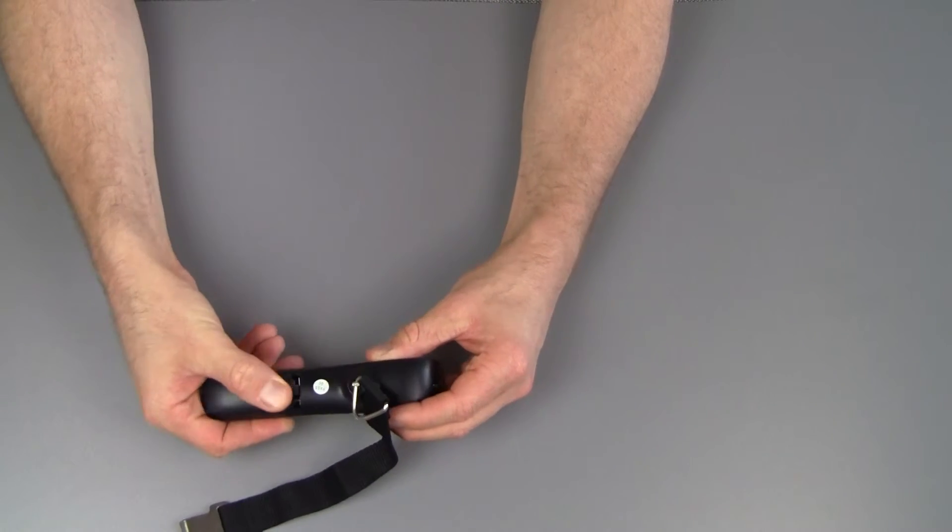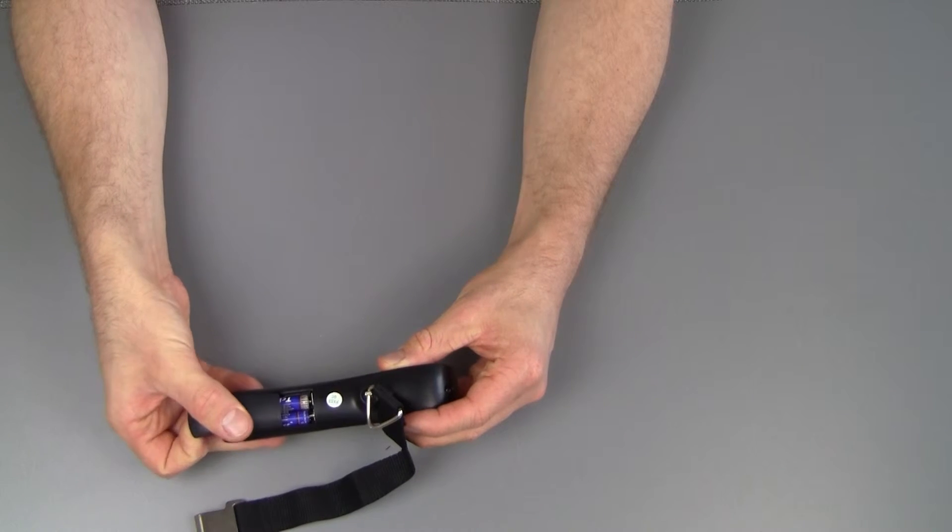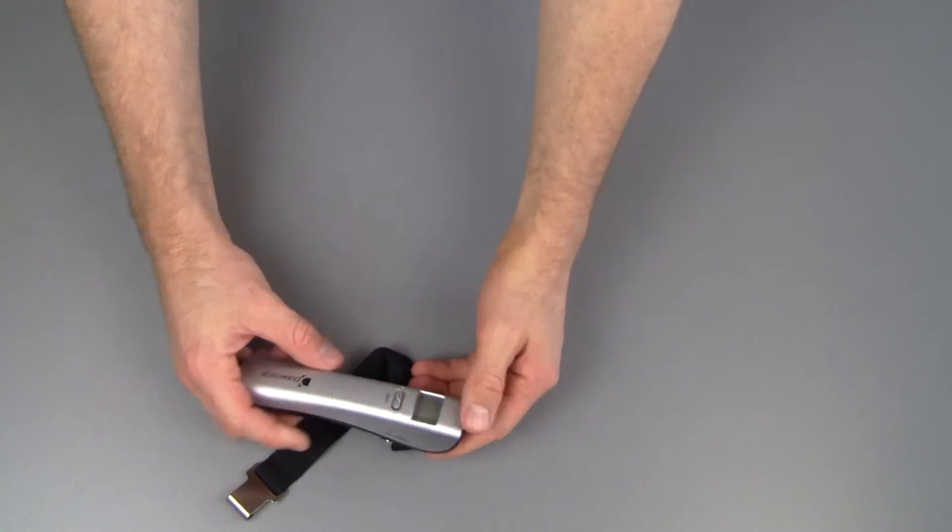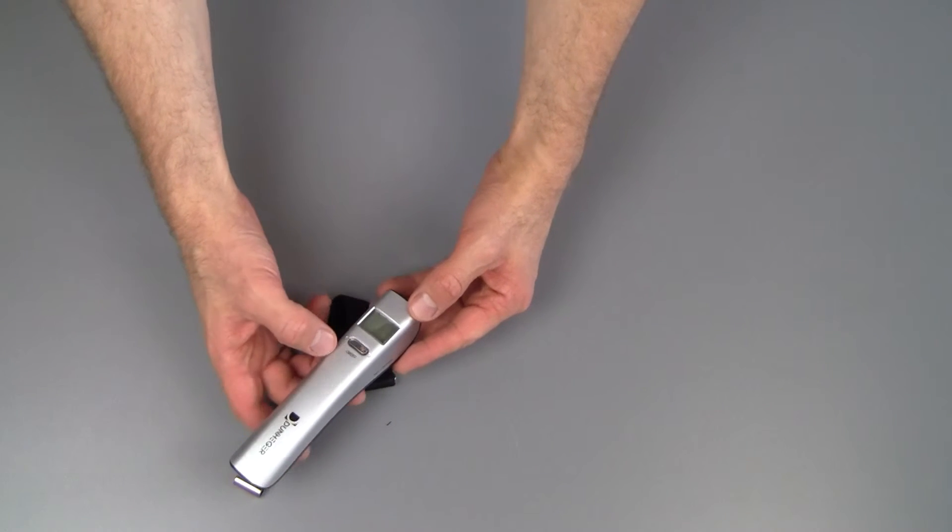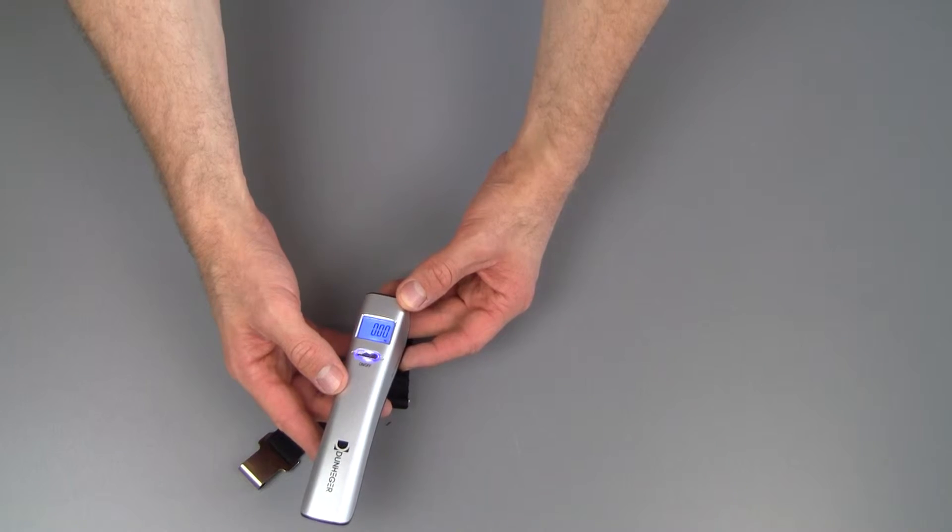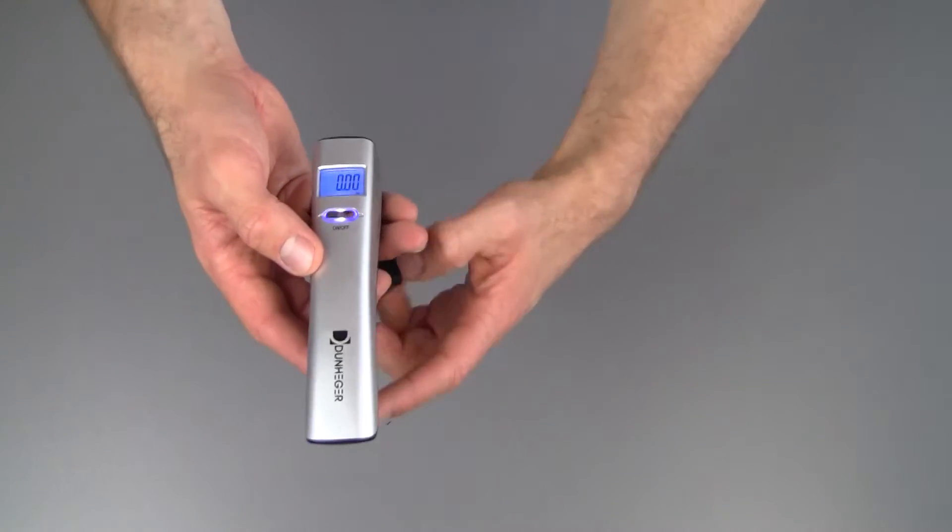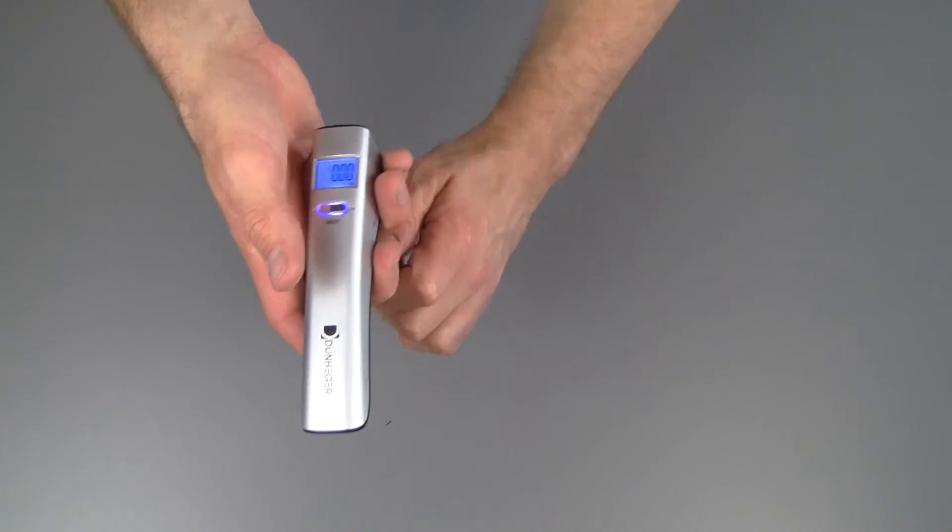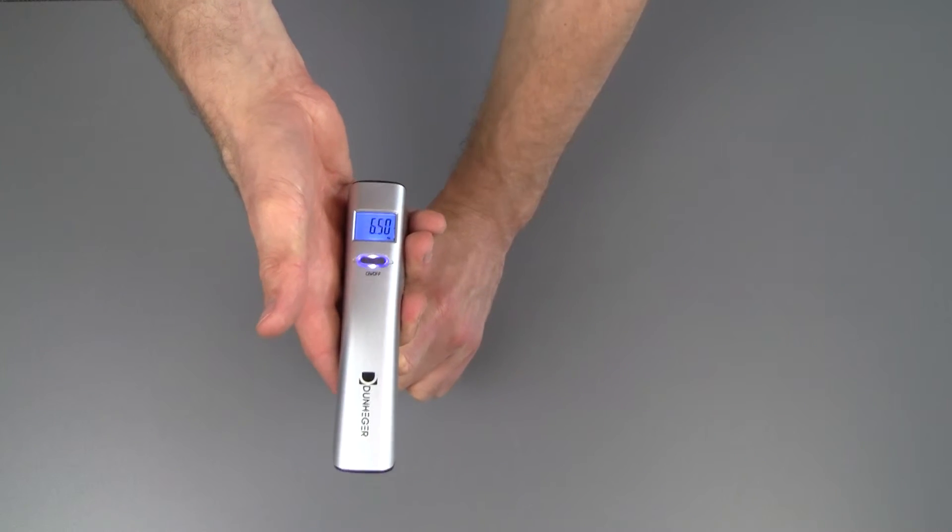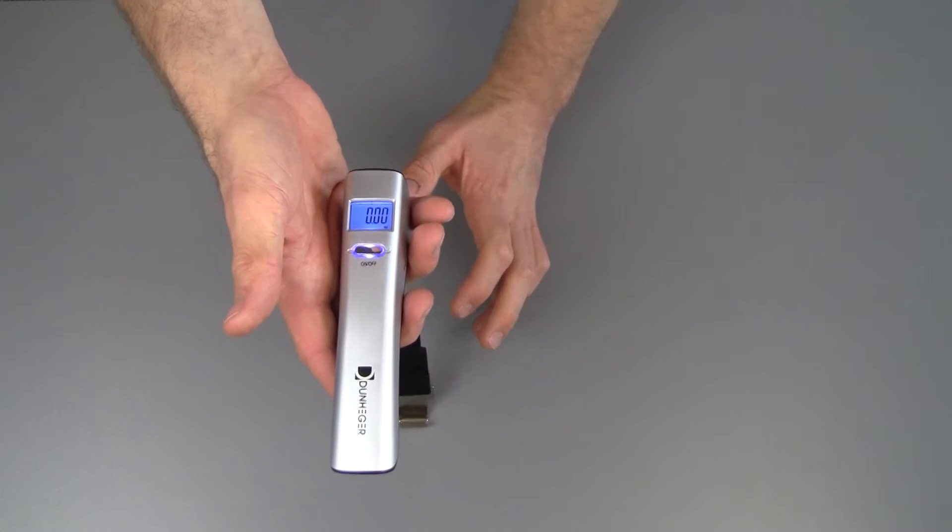On the back here we got a little battery door with two batteries that are included so that is even better. Now this is really as simple as it gets. So you turn it on, the screen turns blue as you can tell, now it's ready and then when you pull the cord you can see that the weight is going up and that's really all it does.